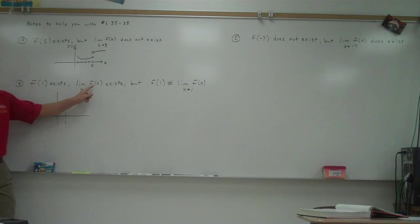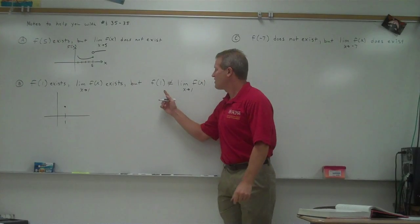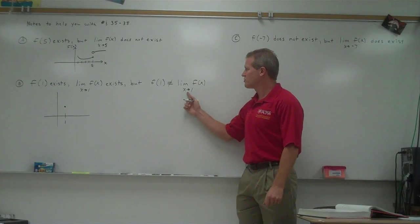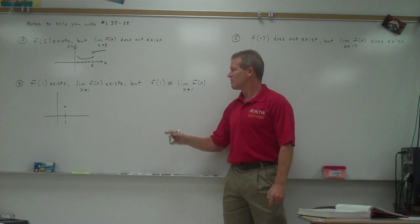Now, this says the limit of f of x exists as x approaches 1. But f of 1 and the two-sided limit as x approaches 1, but they're not equal.